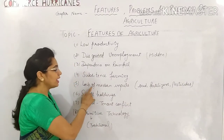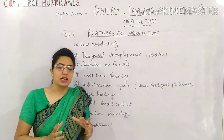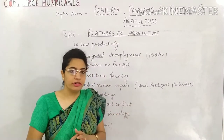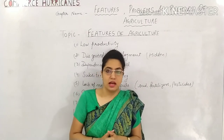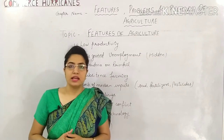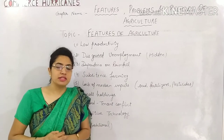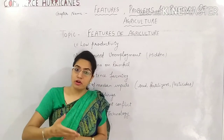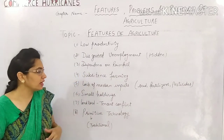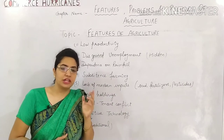The next feature is lack of modern inputs. Inputs means the things needed for agriculture — seeds, fertilizers, pesticides. But in our country, the pesticides and fertilizers available are not of high quality, which means our inputs are not good. If your inputs are not good, obviously your crops will not be good either. And if rainfall is also not proper, your crops will be even more damaged. This is why we say Indian agriculture is backward due to lack of modern inputs.